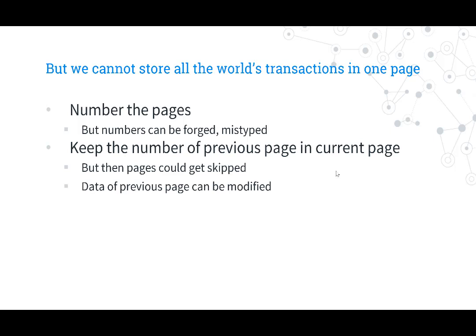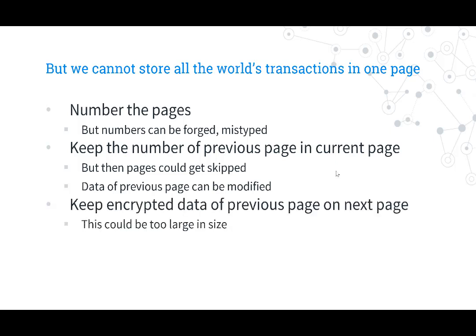We could keep the number of the previous page in our current page so all pages get linked to each other, but pages could still get skipped or previous page data could still be modified. So what if we take a page of data, encrypt its data, and put it on the second page? But then the second page would contain too much data — it would have to hold the encrypted data from the previous page plus the new data.